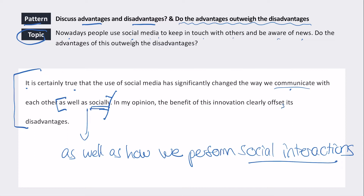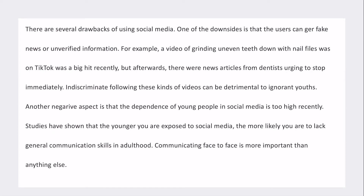They write: 'In my opinion, the benefit of this innovation clearly offsets its disadvantages.' That's fine, but I'd like to see a thesis statement that gives a reason why. For example: 'In my opinion, the convenience of this innovation clearly offsets the disadvantages to young people.' You could also set up the debate — for instance: 'While some people argue that the increase in social media has reduced young people's social skills, new evidence shows that the positive impacts on people's lives are growing stronger.' Give me more background information.